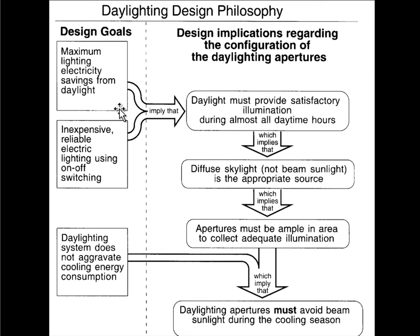We'd like an inexpensive reliable electric lighting system that uses on-off switching. Dimmers cost more money, they tend to be less stable, less durable, and they also pull a substantial amount of power even when the daylighting is more than adequate to illuminate the space. So if we can design a really good daylighting system that provides adequate light during almost all hours, the electric lighting system can be fairly simple and inexpensive, and once it's turned off we know it's turned off and we know we're saving 100% of that energy.